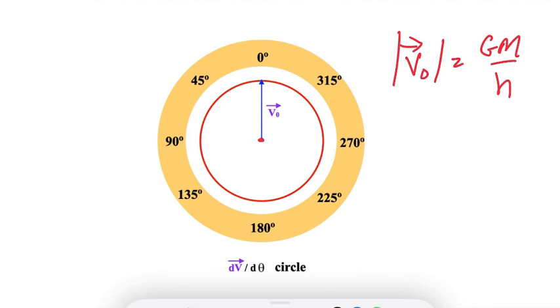And that magnitude is never going to change. So every velocity vector that we might want to draw in has to have the same length. So they all have to be radii.